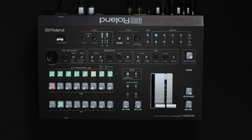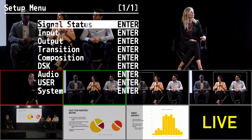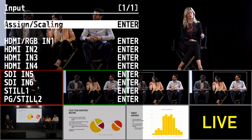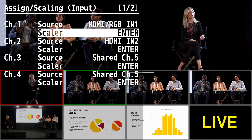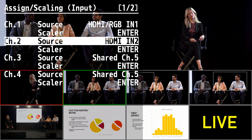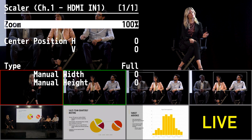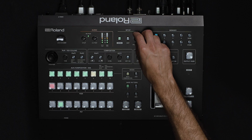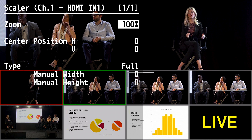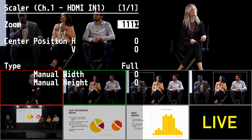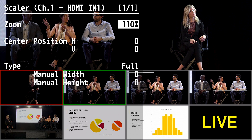Let's go over the scaling functions of the switcher. To adjust the scaling of an input, press the menu button and go to the input menu. Choose the assign/scaling function and then choose the scalar option for the input you want to adjust. Here you can change the zoom, position, and scaling type of your source. By pushing the value knob in, you can highlight the value you want to adjust, and you can see that you can make an adjustment to video input 1 without adjusting the camera.